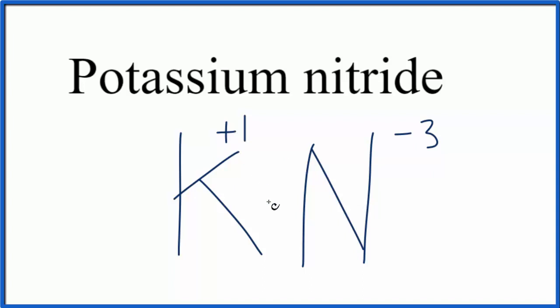What we can do is if we put 3 here, 3 times plus 1, that'll give us a plus 3. That'll cancel out the minus 3. And that'll mean that K3N is the correct formula for potassium nitride.